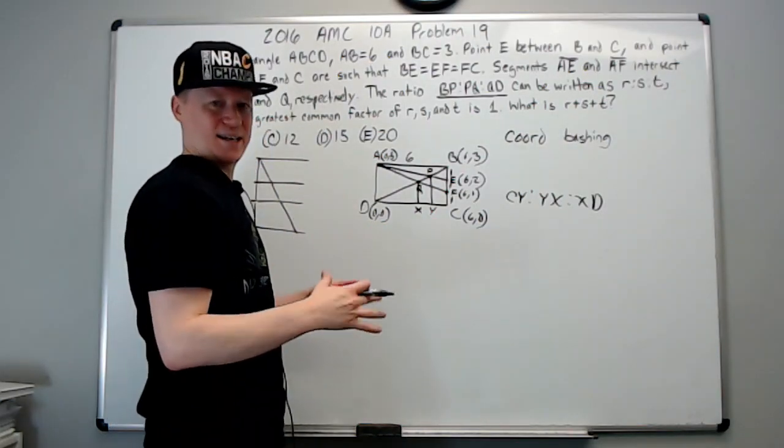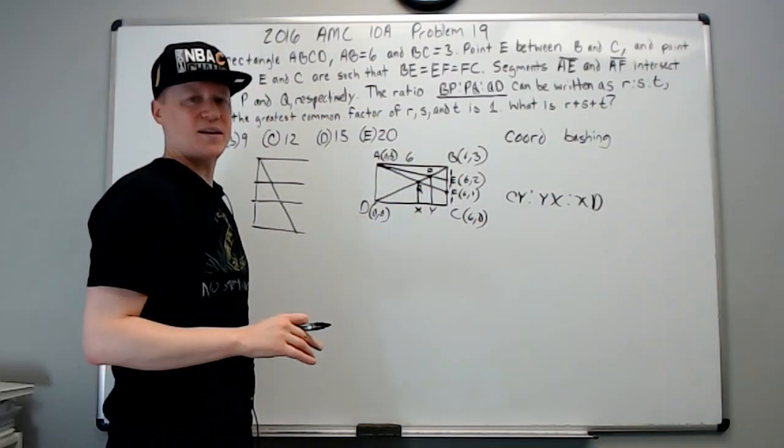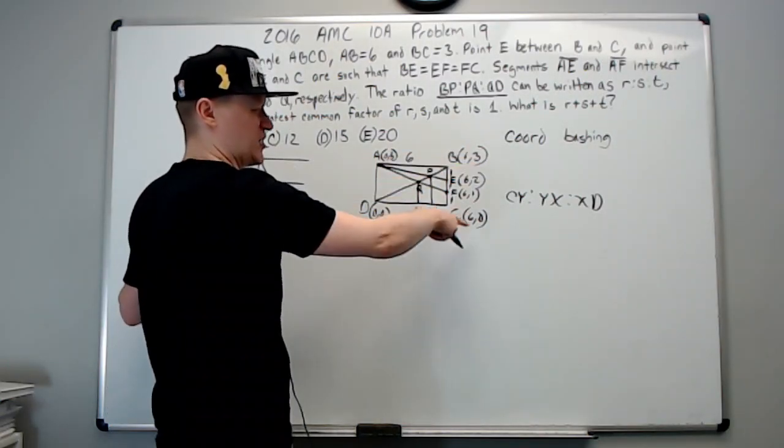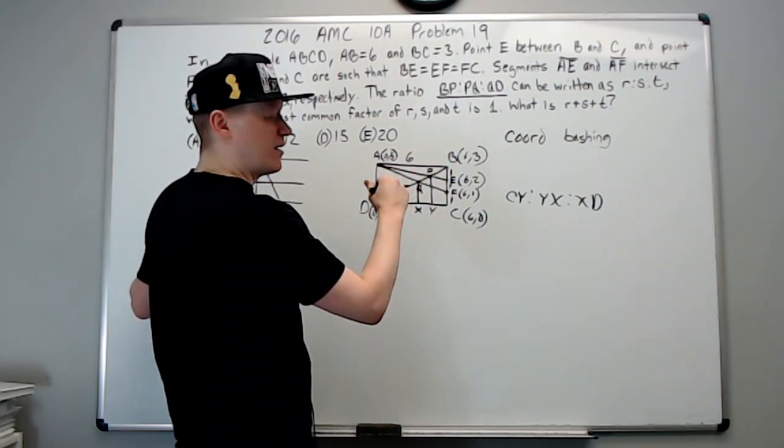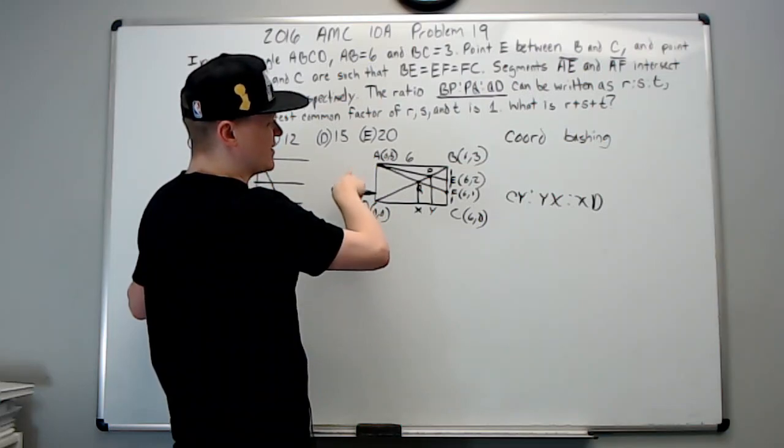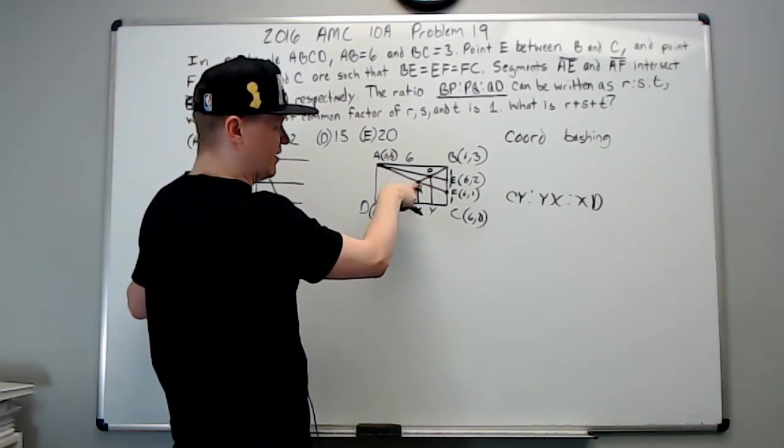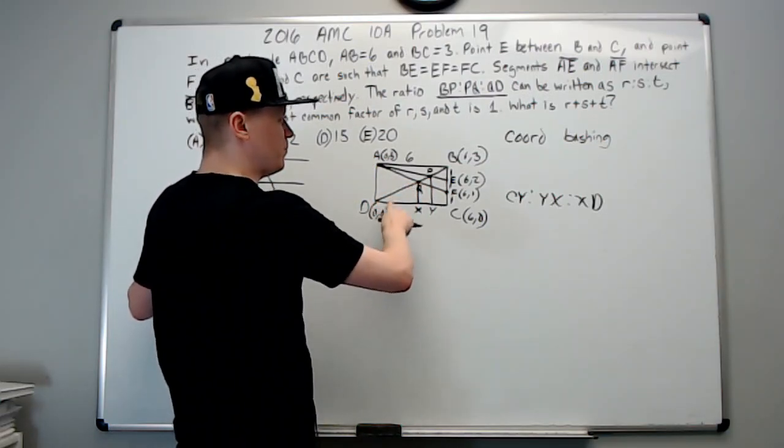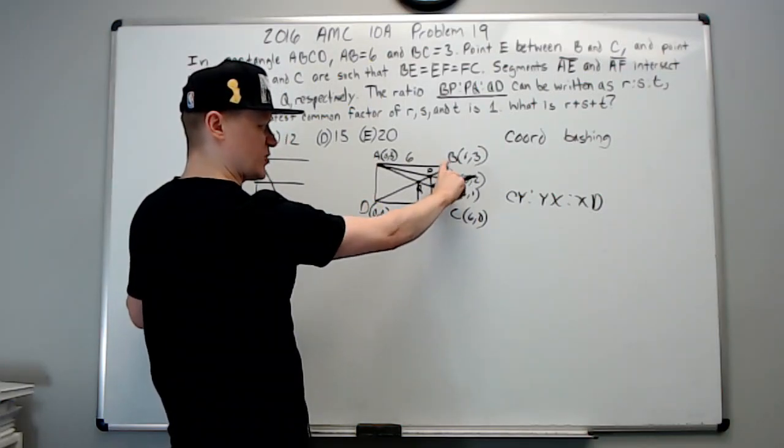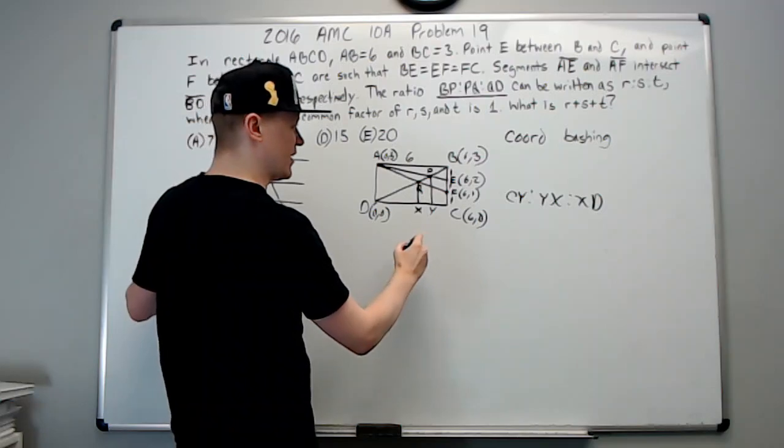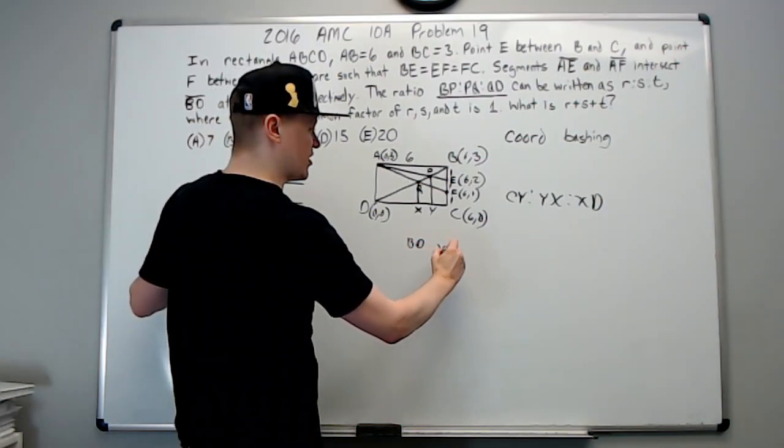Then when we want this expression here, BP to PQ to QD, it's equivalent to CY to YX to XD. That's the same as what we want and this is going to be easier to find. Okay, so you could probably find a bunch of ways, again similar triangles I'm sure is a way that you could do it, but I'm just going to go with the coordinate bashing hybrid, not full-on coordinate bashing I guess, maybe it is, I don't know, whatever.